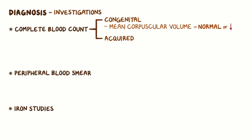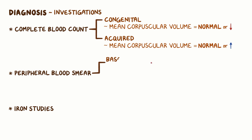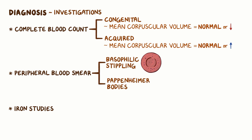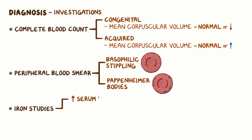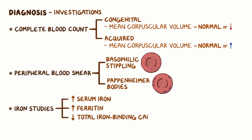For acquired forms, the mean corpuscular volume is normal or high. In the peripheral blood smear, we would expect to see erythrocytes with basophilic stippling and Pappenheimer bodies, which are purple-staining granules of iron found inside RBCs. Iron studies will show high serum iron, increased ferritin levels, and decreased total iron binding capacity.